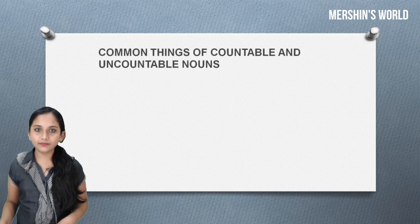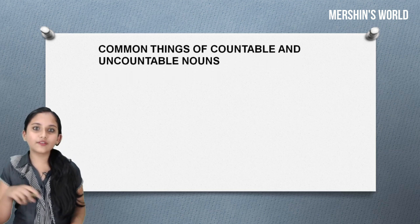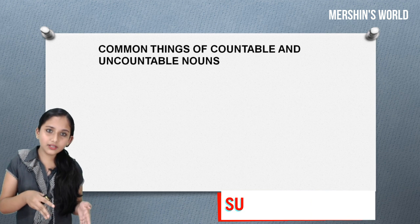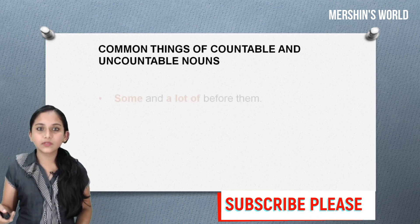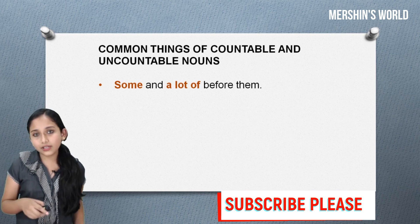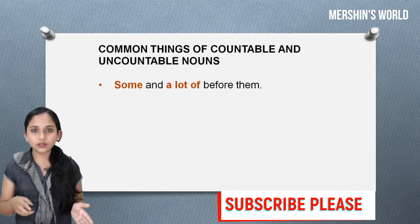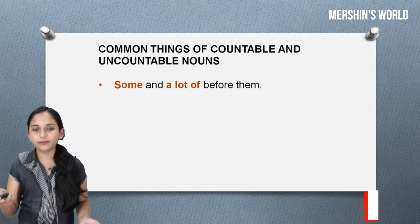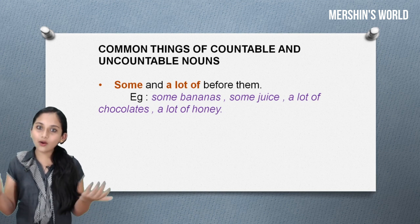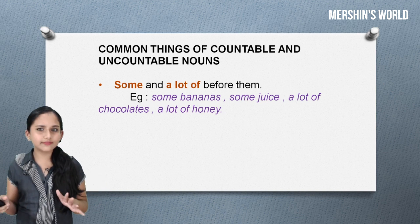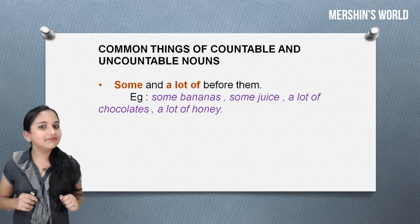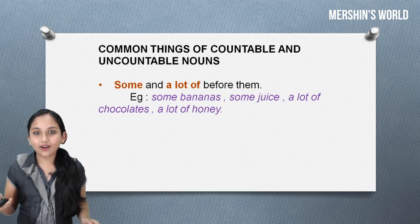Next, we'll see common things of countable and uncountable nouns. Both take 'some' and 'a lot of' before them. Examples: some bananas — bananas are countable nouns; some juice — juice is an uncountable noun; a lot of chocolates; a lot of honey.